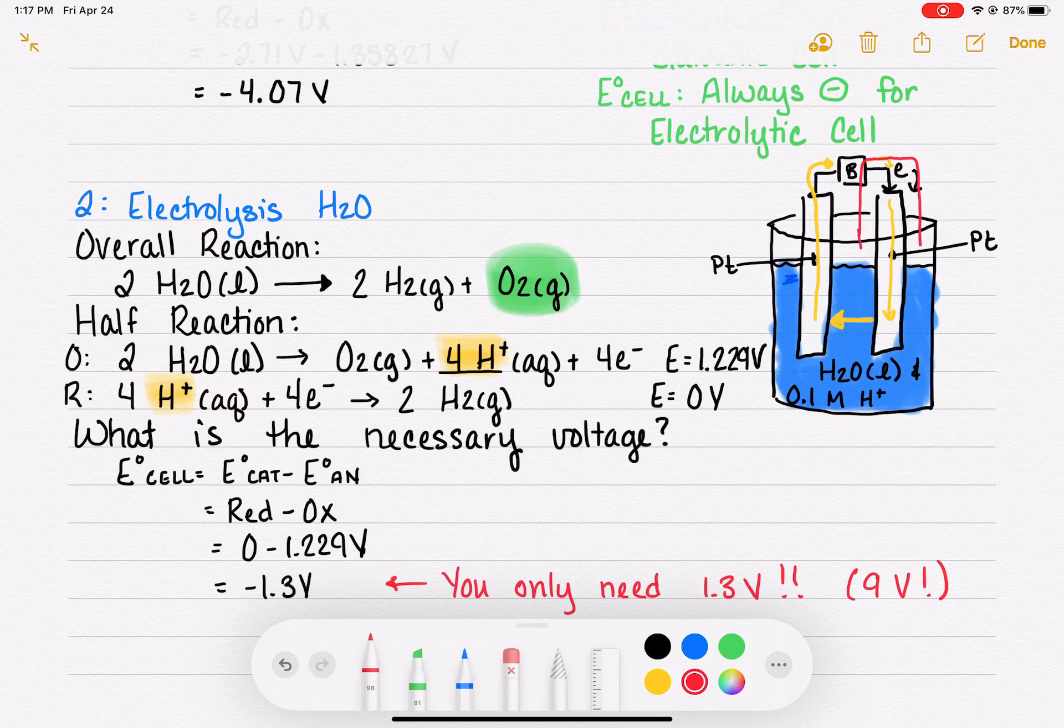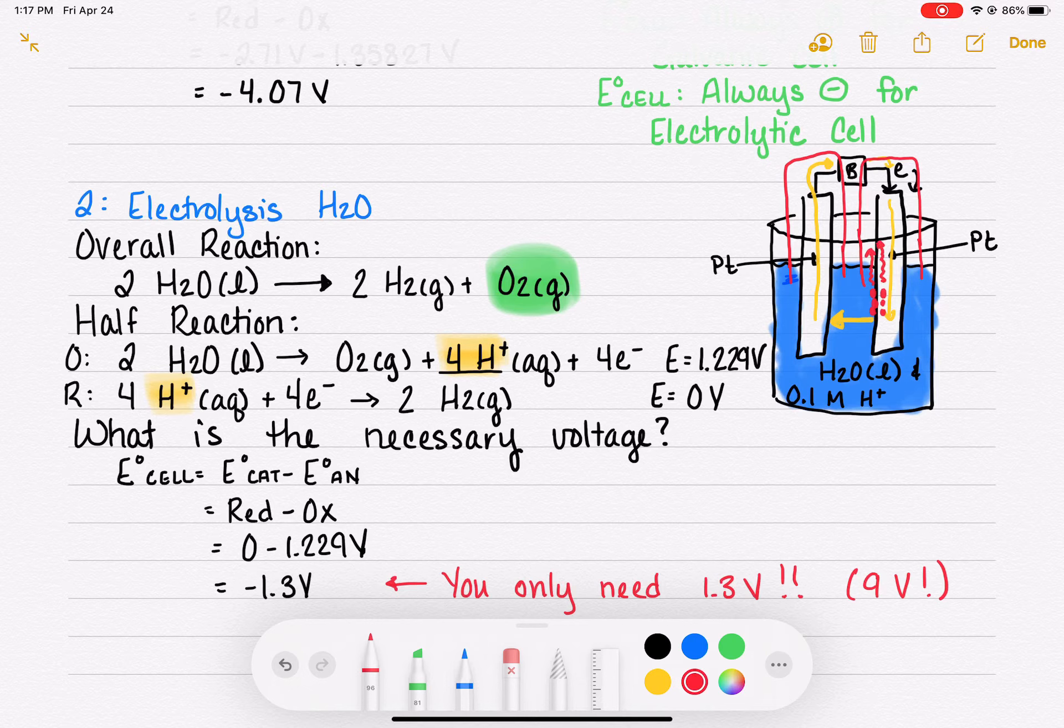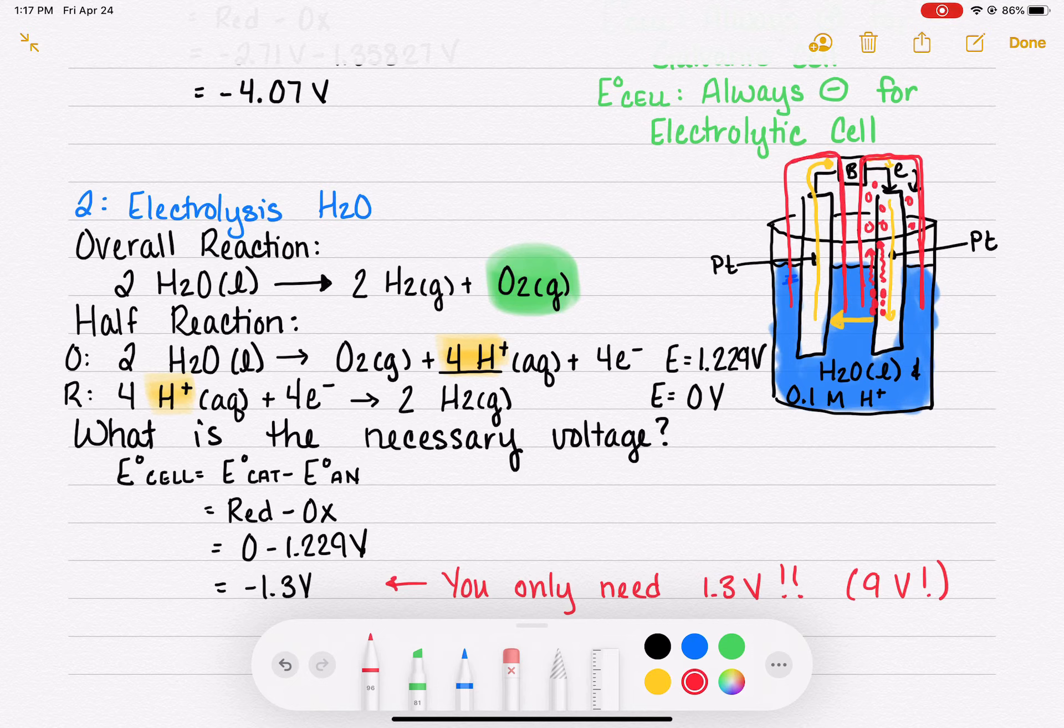The gases in this electrolysis reaction are being generated along the surface of the electrodes and then they're bubbling up because they're gases. If you could trap this, put some type of container over the top of it, you could fill it up with all of these bubbles of gas. Those are circles, not O's.